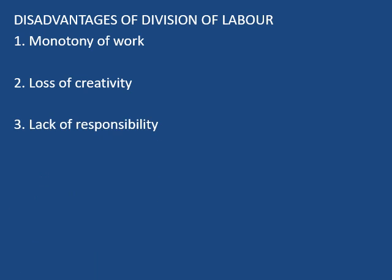The next point is lack of responsibility. The work is divided among so many people that if there is any defect in the commodity, you cannot blame a particular person because so many people are involved. Therefore, there is lack of responsibility — nobody is responsible for the defect. Next is excessive interdependence. There is too much dependence of workers on each other. If there are 10 workers and 10 tasks and a final product has to come out, if even one worker stops working, the product will not come out. Any problem or defect in one part can cause disturbance in the entire process of production.